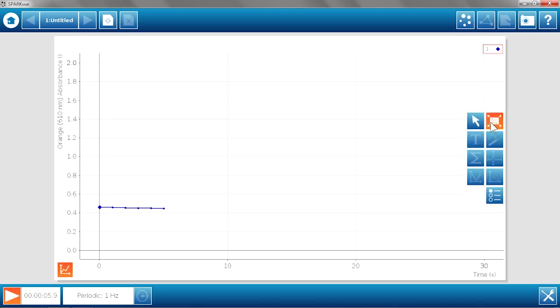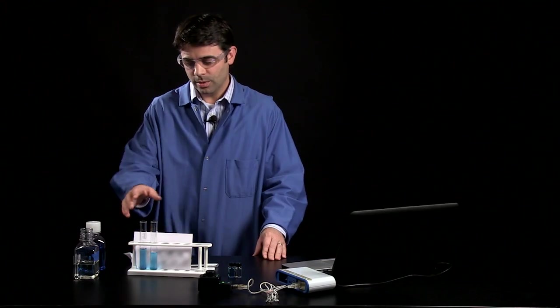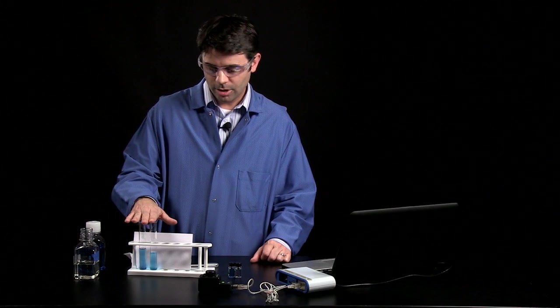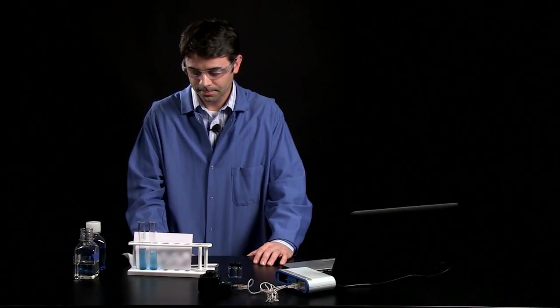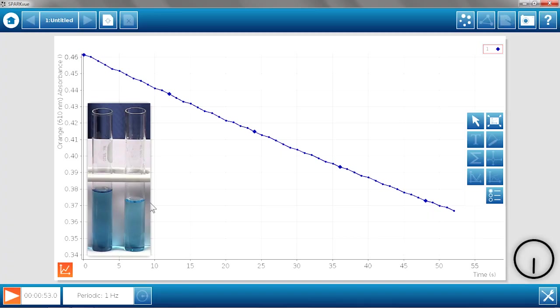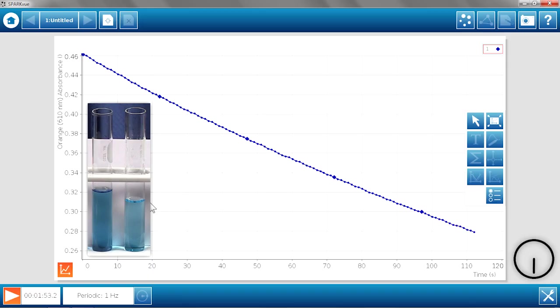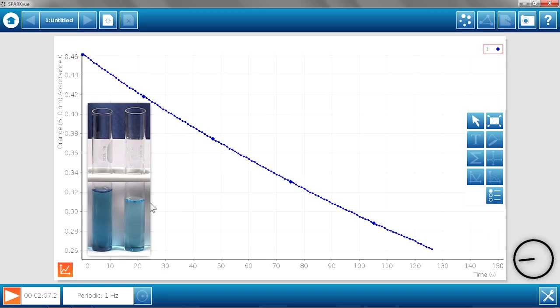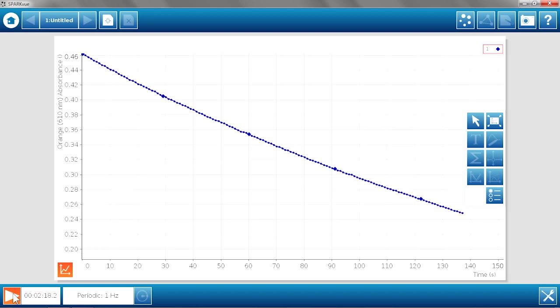We can autoscale this. Now, what we can do, since we have the two things here, we can monitor the reaction here and observe the absorbance using the SparkView and the colorimeter. So we let the reaction run for about two minutes, and the absorbance went from 0.46 down to about 0.26. This is a good place to do some analysis, so I'm going to stop the data collection.